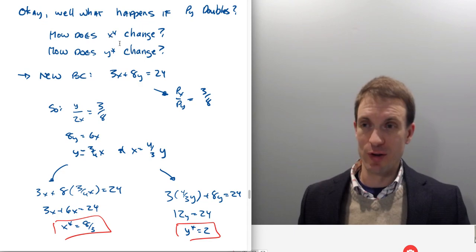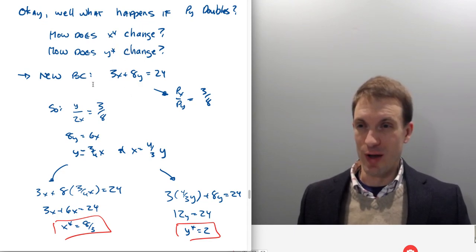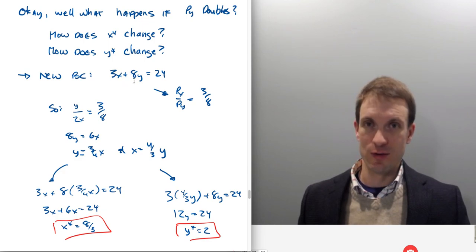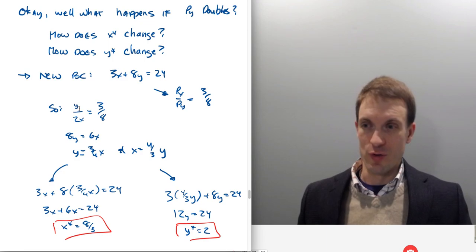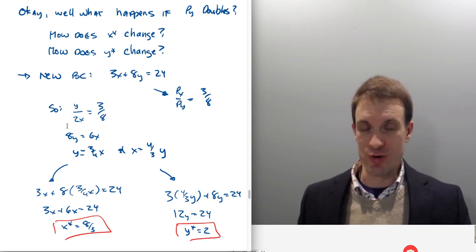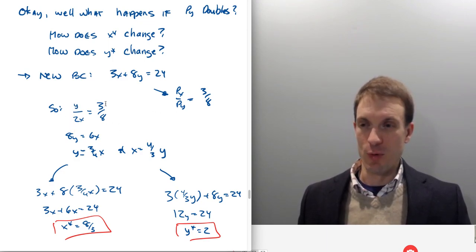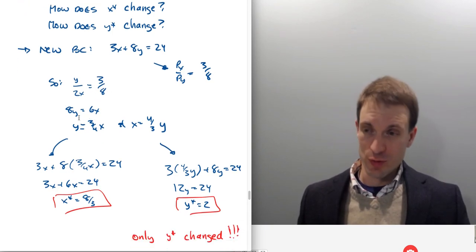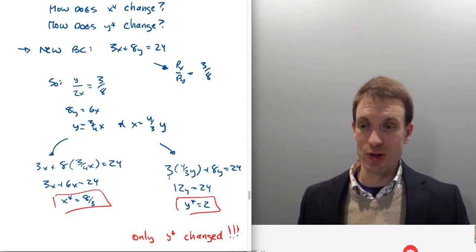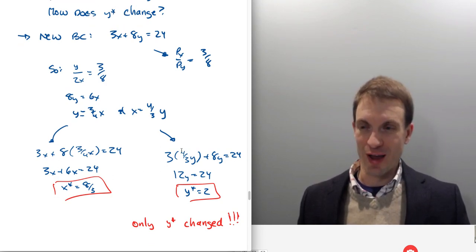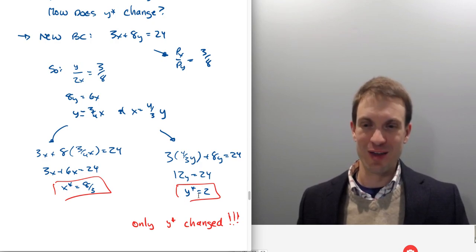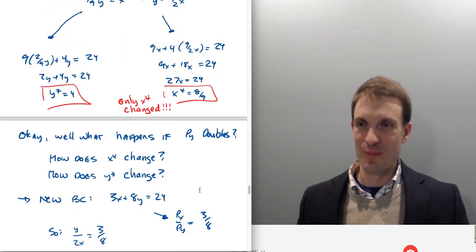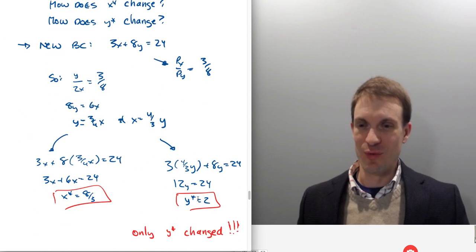What happens if the price of good Y doubles? How does my optimal bundle change? Well, my new budget constraint is now going to be 3X plus 8Y equals 24. And so again, my ratio of marginal utilities doesn't change. But what does change is my price ratio. So this gives me a new tangency condition, which I'm going to solve, substitute into my budget constraint again. And in doing so, I substitute for X, I substitute for Y, and I find my demand for Y has changed. It went from Y=4 to Y=2.